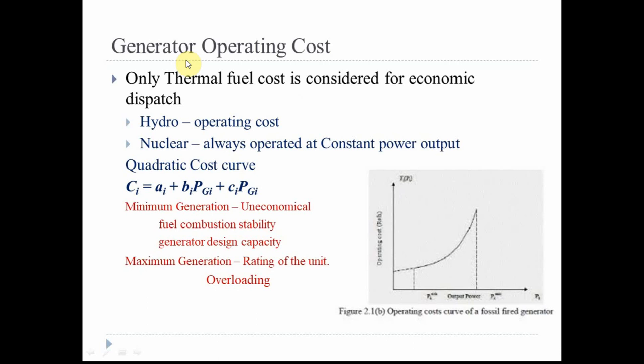Nuclear power plants are not included for economic dispatch either. We use the entire nuclear plant capacity to supply the load — for example, if a nuclear plant has 500 MW capacity, the entire 500 MW is used. Unlike a thermal power plant, we use the entire rating of the nuclear plant, so it is always operated at constant power output. Since startup and shutdown costs are very high, frequent switching is not possible, so nuclear plants always serve as base load. Hence they are not included in the economic dispatch problem.